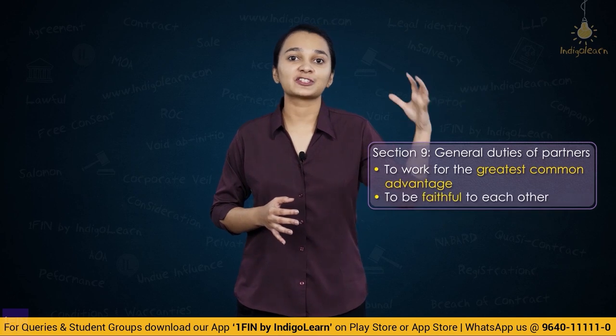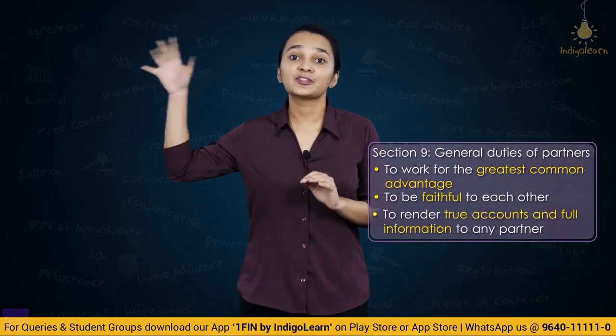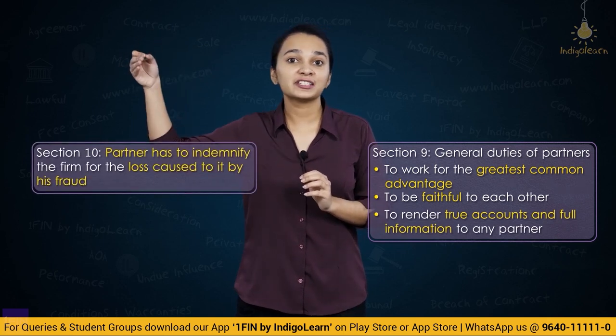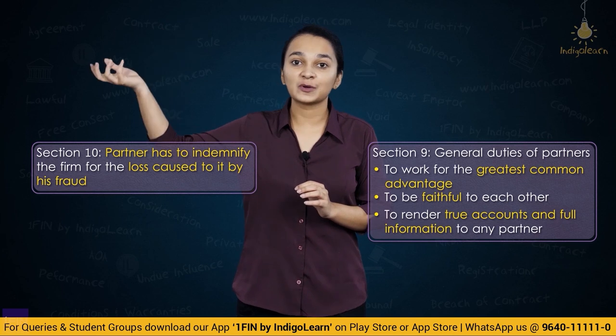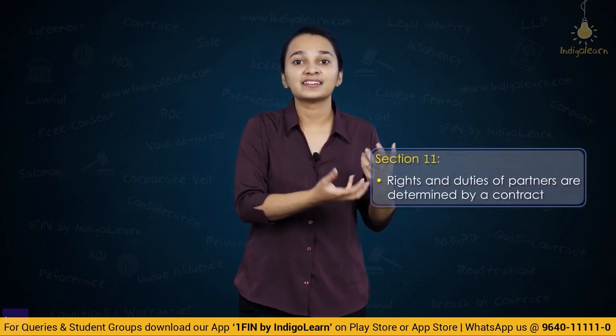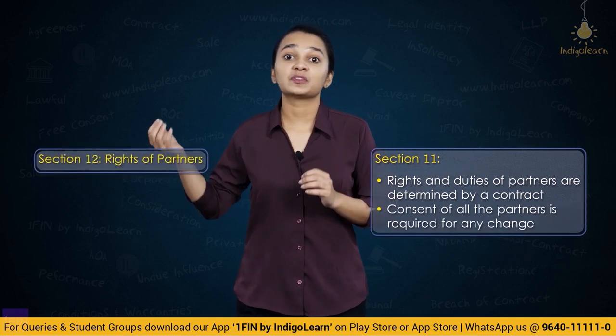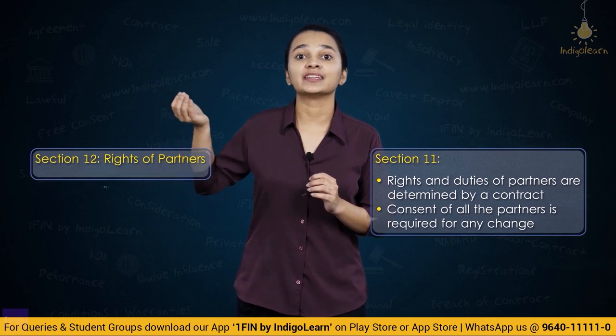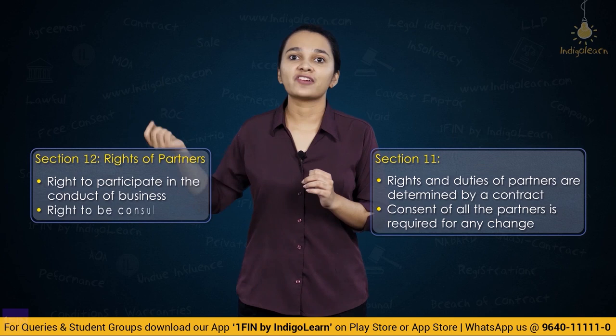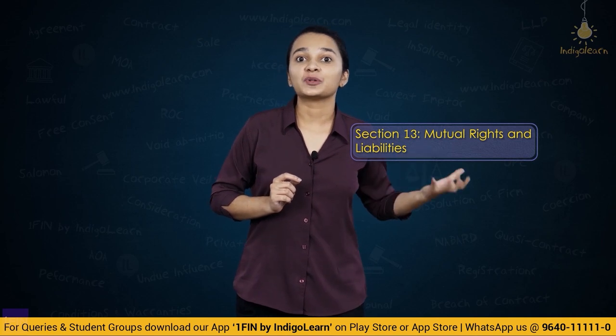Let us do a quick recap of the sections. Section 9 talks about general duties — partners must work for the greatest common advantage with utmost good faith, disclose all information, and render accounts. Section 10 says that if a partner is involved in fraud, he must indemnify the firm against losses caused by his fraud. Section 11 says rights and duties of partners are as per the contract and can be changed with consent of all partners. Section 12 talks about the right to participate in conduct of business, right to be consulted, and right to access books of account.